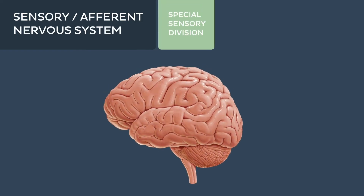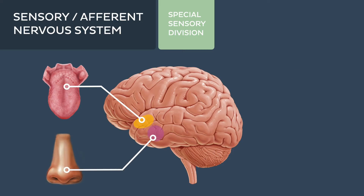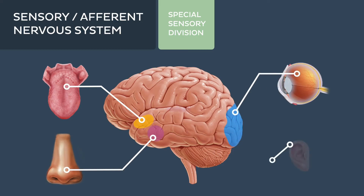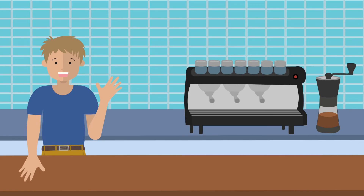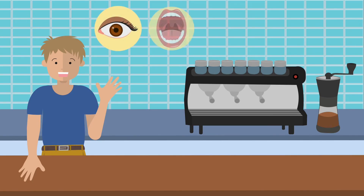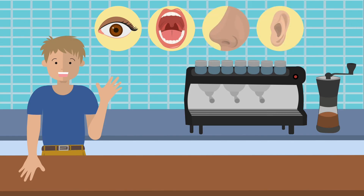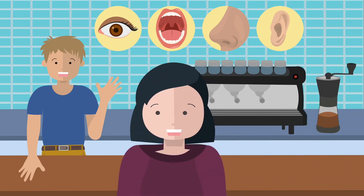Receptors in the special sensory division are located in specific organs like the oral cavity, nose, eyes, and ears, and transmit more specialised sensorial information about the special senses — the sight of the coffee cup, the taste of the espresso shot, the smell of the coffee shop, the sound of the coffee grinder, and your ability to balance your body while walking towards the coffee counter.